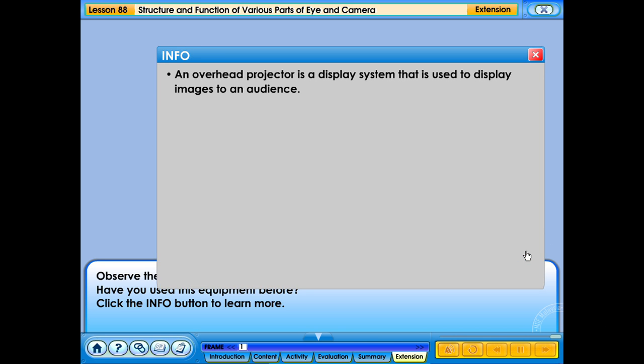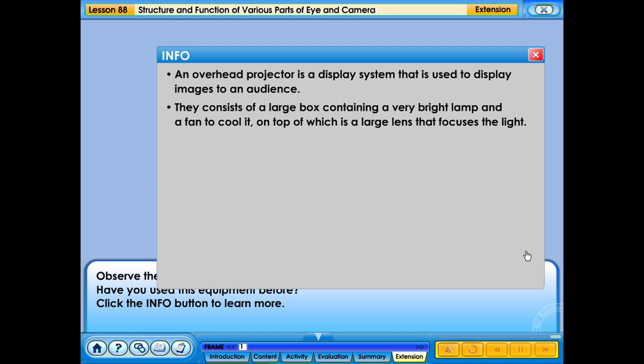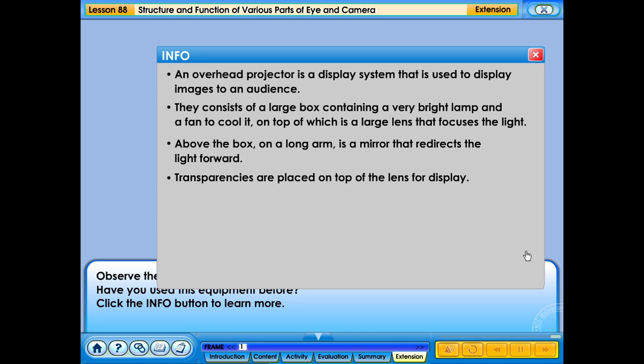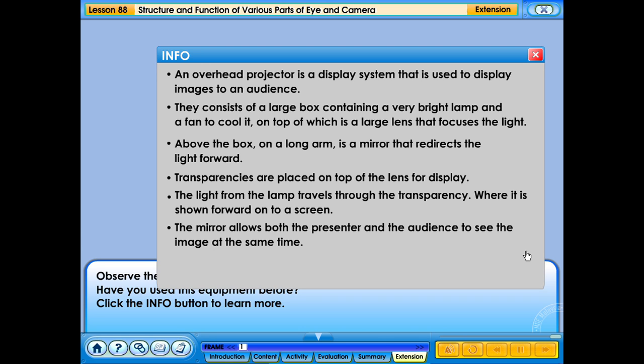An overhead projector is a display system that is used to display images to an audience. They consist of a large box containing a very bright lamp and a fan to cool it, on top of which is a large lens that focuses the light. Above the box, on a long arm, is a mirror that redirects the light forward. Transparencies are placed on top of the lens for display. The light from the lamp travels through the transparency, where it is shown forward onto the screen. The mirror allows both the presenter and the audience to see the image at the same time.